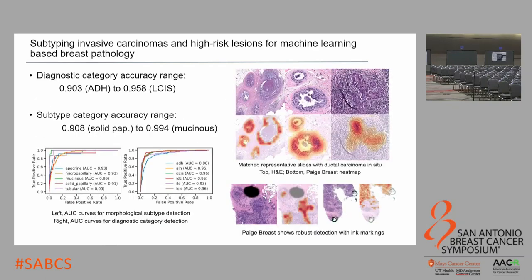The results are very impressive. For the diagnostic category, accuracy ranges from 0.9 for atypical ductal hyperplasia to 0.96 for lobular carcinoma in situ. For histologic subtypes, accuracies range from 0.9 for solid papillary to 0.99 for mucinous — approaching clinically meaningful performance. These tools don't have to be perfect; they just have to improve on what humans can do, which is still very subjective. One nice feature is a visual heatmap overlay on the whole slide image so the pathologist can see which regions are driving the prediction. They've also demonstrated robustness to artifacts like inking or schmutz on slides during prep or scanning.